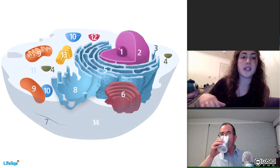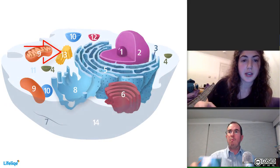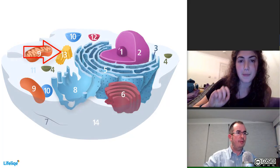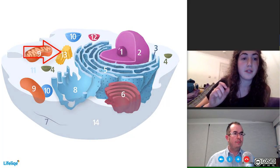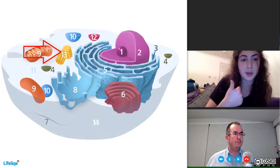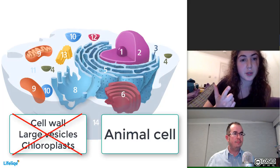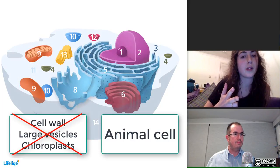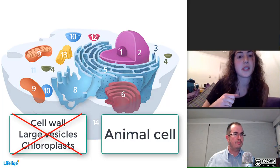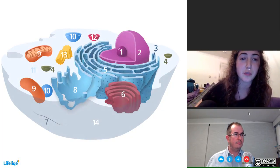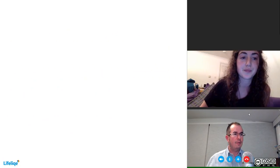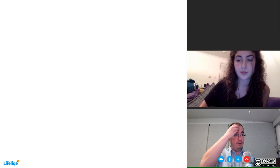The cells of protoctists and animals have two centrioles and many organelles, but they do not have a cell wall, large vacuoles, or chloroplasts. Their nuclei are generally more or less central, and occasionally structures are used for movement, like cilia and flagella.